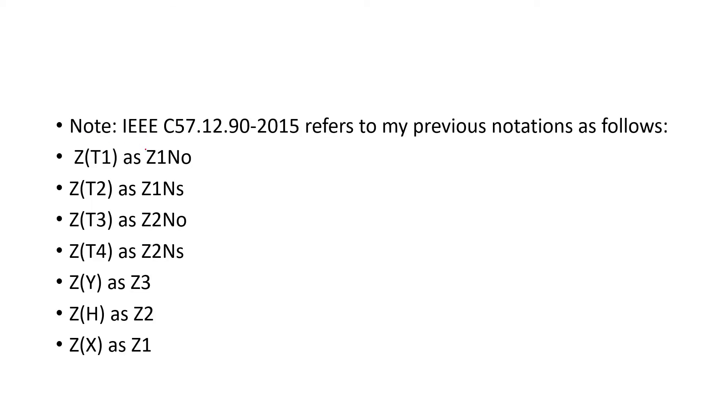So just some notes here: IEEE C57.12.90-2015. So this 12.90 is the test code, and 2015 means it was published or approved in 2015. So what I call zero sequence impedance obtained from test 1, that's what they call it. The same thing here, so they mean the same thing, it's just... So like when I built the T-model, so I called it H, X, called it Y. So if you read IEEE, this might be 1Z3 something like that, but they mean the same thing.